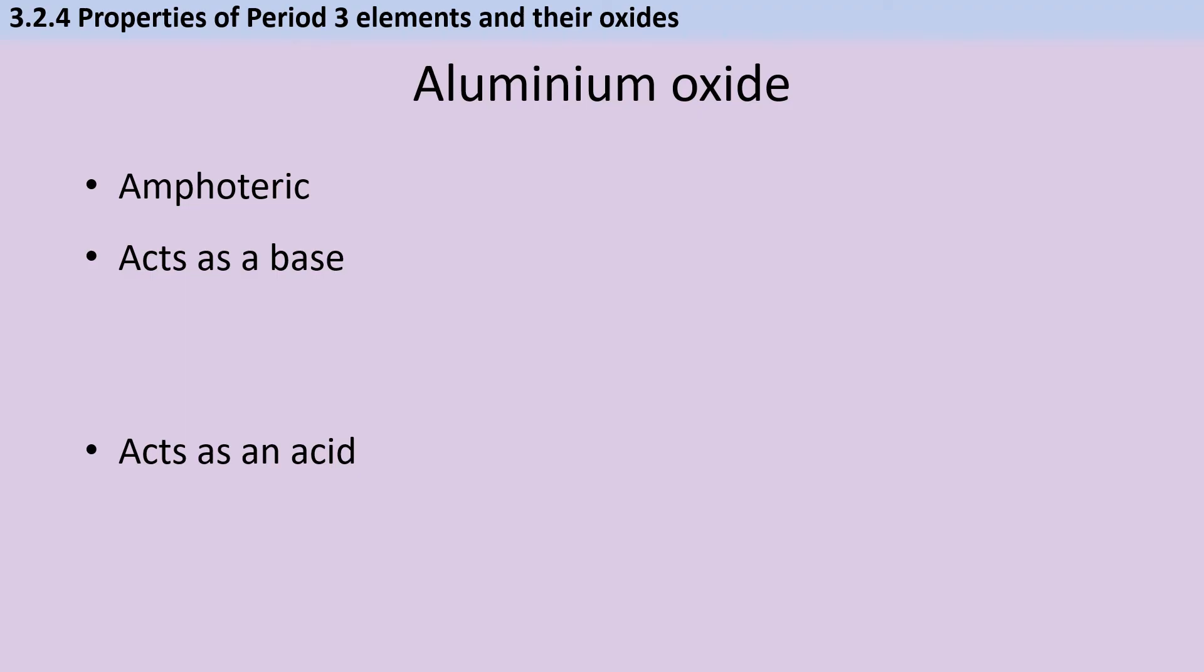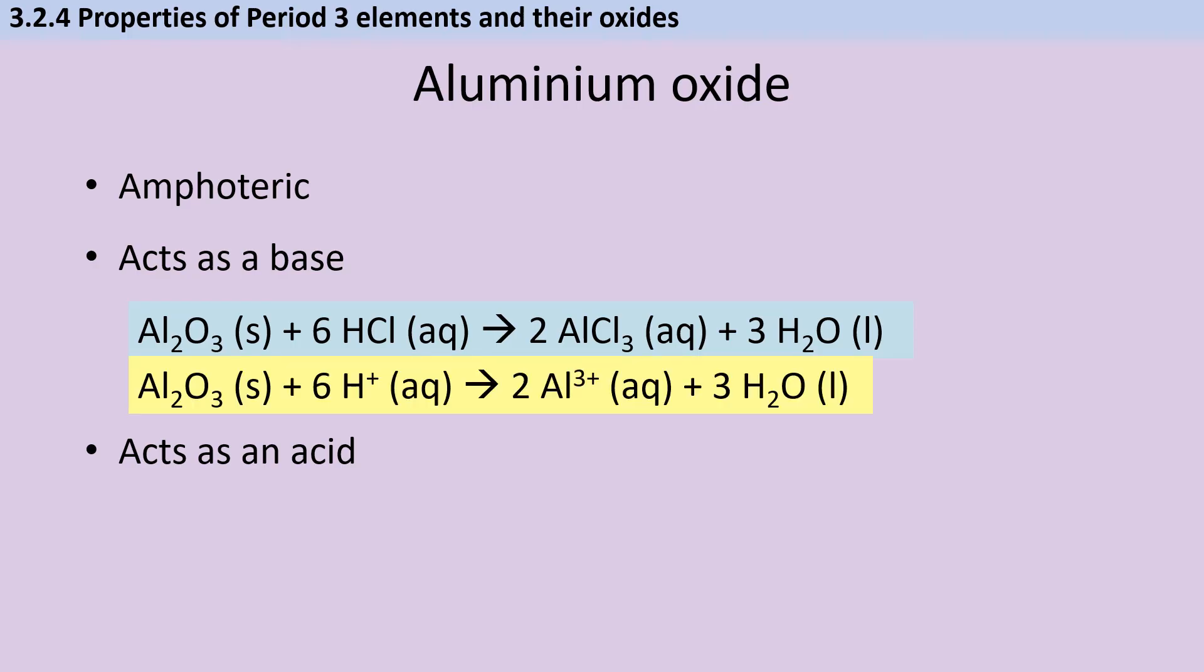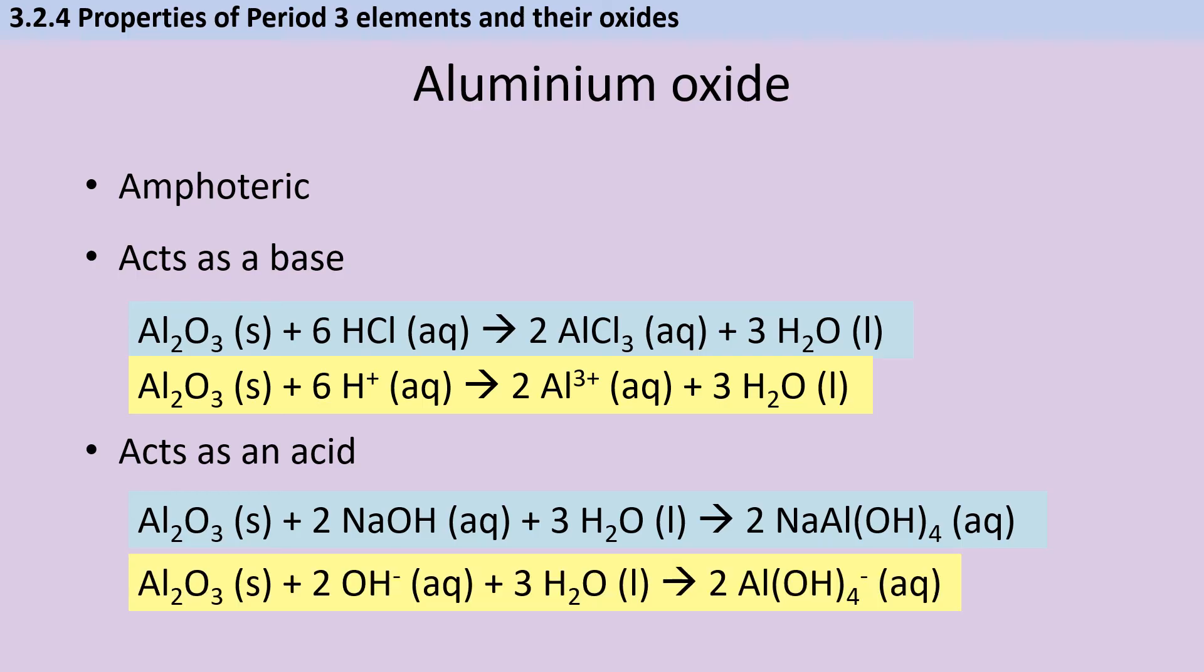Aluminium, as ever, is the complicated one. Aluminium oxide is amphoteric, which means that it can act as either an acid or as a base. You need to be able to write symbol equations for aluminium oxide acting in both ways. So to give you an example of it acting as a base, here we have it reacting with hydrochloric acid to make a salt and water, and again we can write this as an ionic equation if we omit the spectator ions. Then it can also act as an acid, so here we have aluminium oxide reacting with sodium hydroxide to make sodium aluminate, which is what was made during the hydroxide precipitation test to identify the cations. And again, we can put that as an ionic equation as well if we omit the spectator ions.